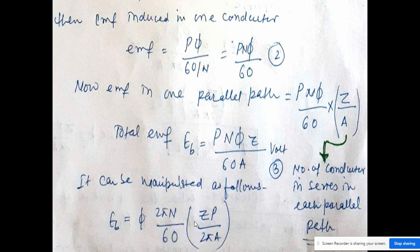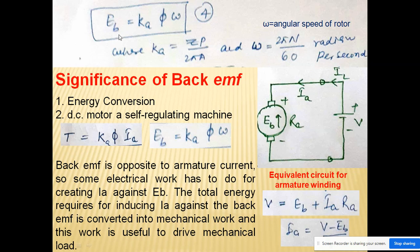Since Z, P, and A form a constant, and N/60 multiplied by 2π gives angular velocity ω in radians per second, the back EMF equation becomes Eb = Ka·φ·ω, where ω = 2πN/60 is the angular speed of the rotor in radians per second. This is the final back EMF equation.